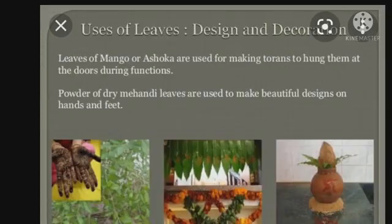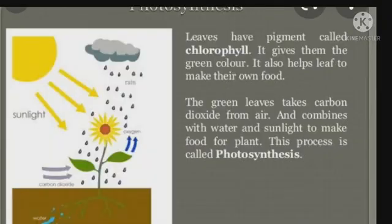There are also uses of leaves for design and decoration. Leaves of mango or ashoka are used for making torans to hang at the door during functions. Powder of dry mehndi leaves is also used to make beautiful designs on hands and feet. Another important function of leaves is that they help in the process of photosynthesis. Leaves have a pigment known as chlorophyll which gives them their green color, allowing them to make their own food with the help of air, water and sunlight.